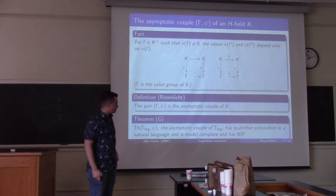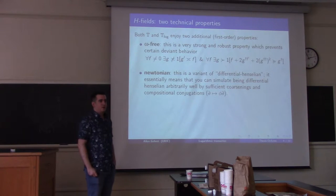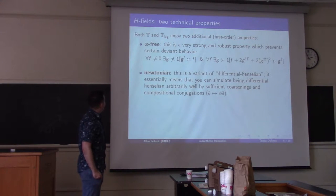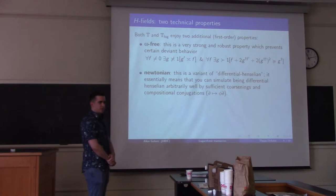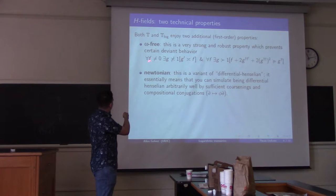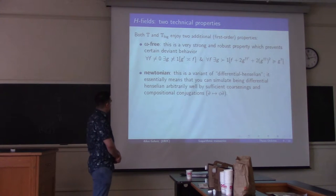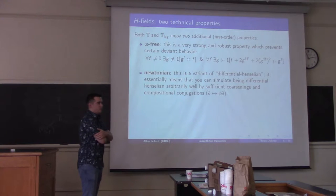Here are some other nice properties that H-fields may or may not have. As it turns out, both T and T-log have these two properties. The first one, omega-free — I don't want to say too much about it, but it's a magical first-order property which makes nice theorems hold. And both T and T-log have this property. Perhaps more intuitive is the next property, Newtonian, which T and T-log also have.